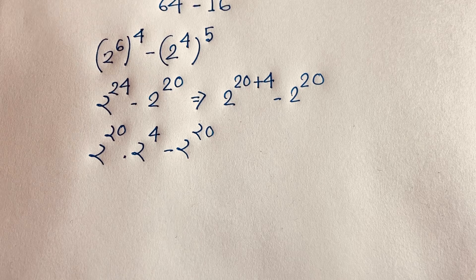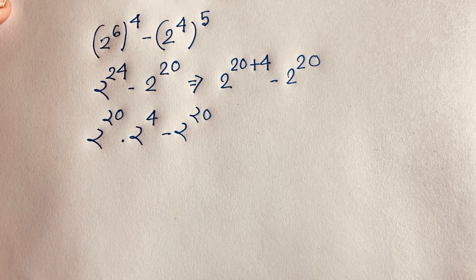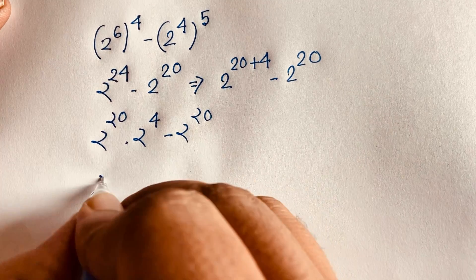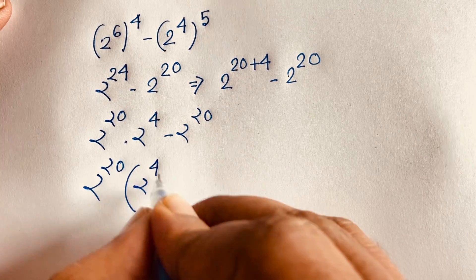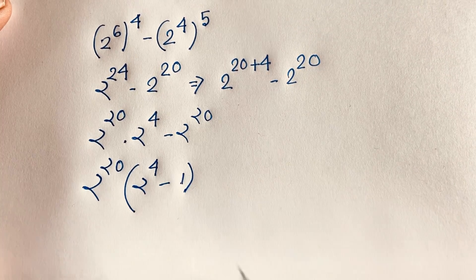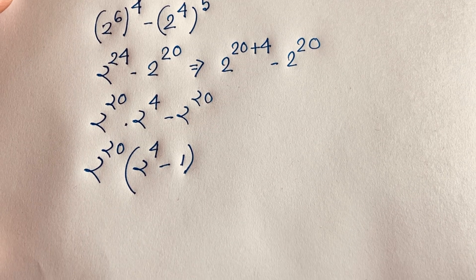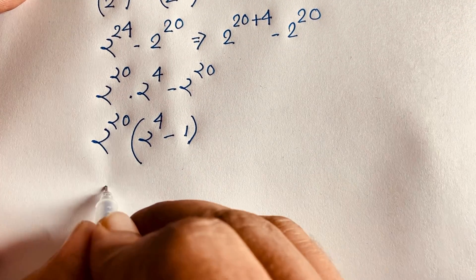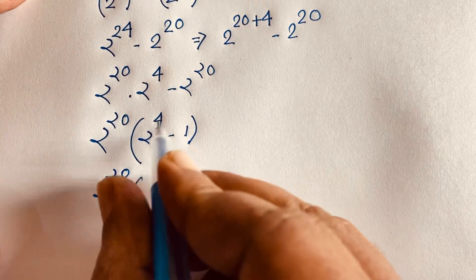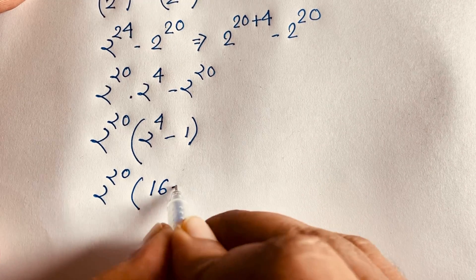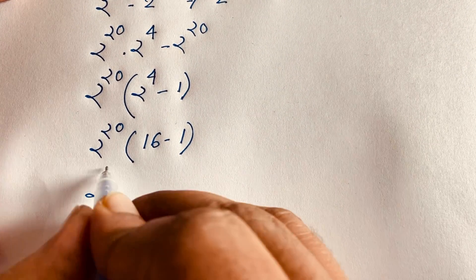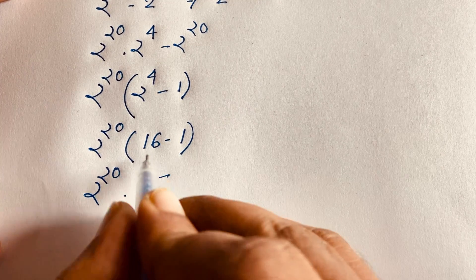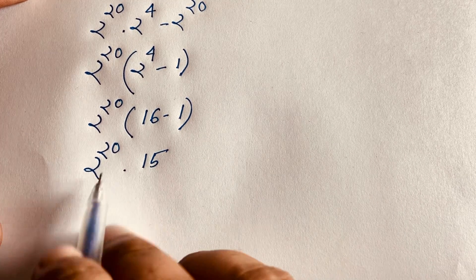In this expression, 2 to the power 20 is common. Factoring it out, we get 2 to the power 20 times (2 to the power 4 minus 1). We know 2 to the power 4 equals 16, so 16 minus 1 equals 15. This gives us 2 to the power 20 times 15 as our simplified expression.